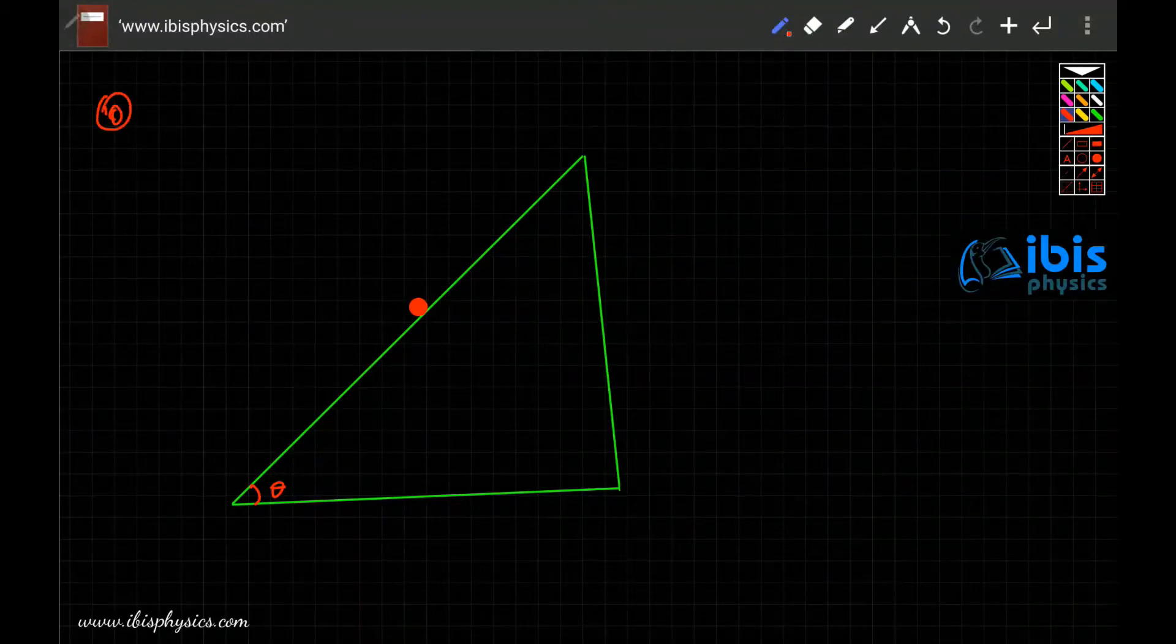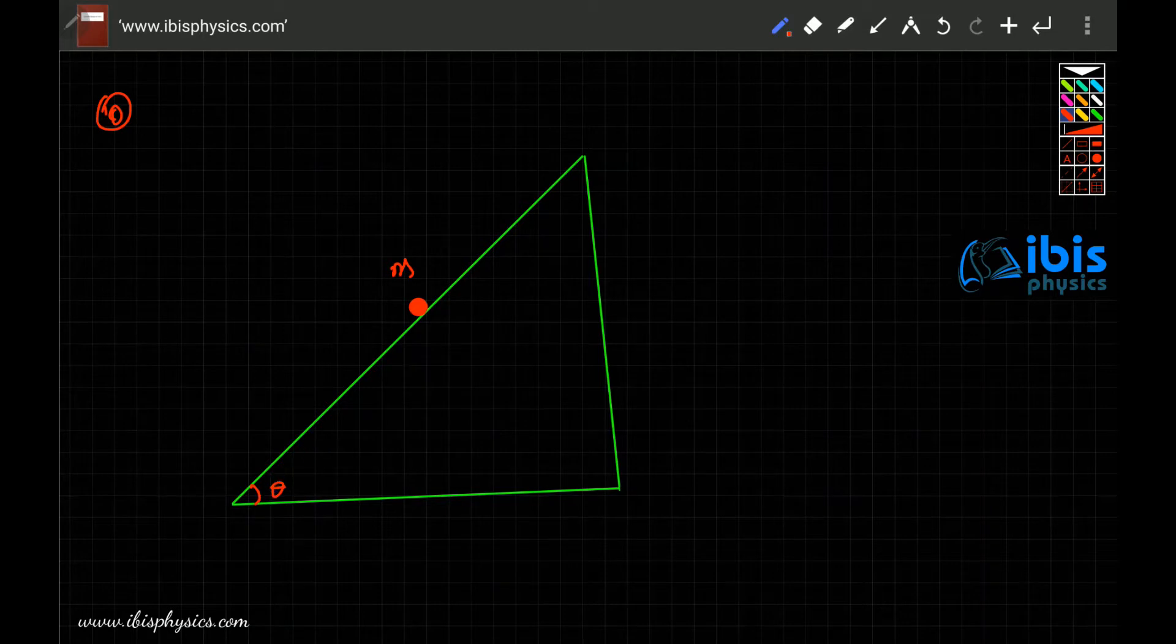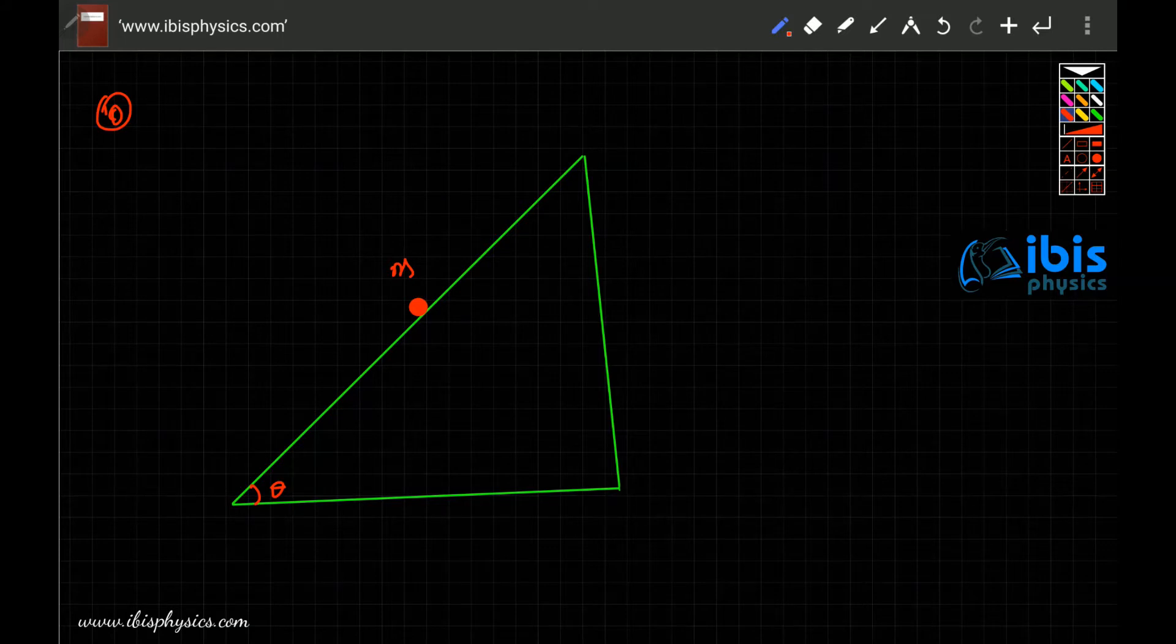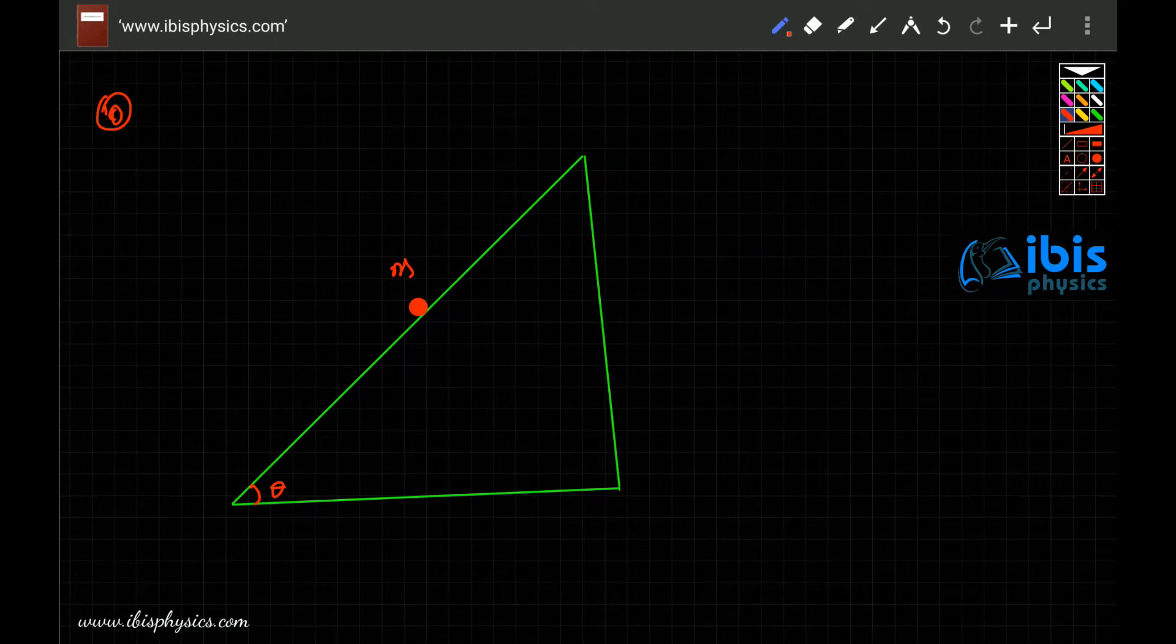In question number 10, the mass M is on an inclined plane of angle theta. If it begins to move, what is the maximum force of friction that is experienced by this? What is the maximum static frictional force experienced by the mass?